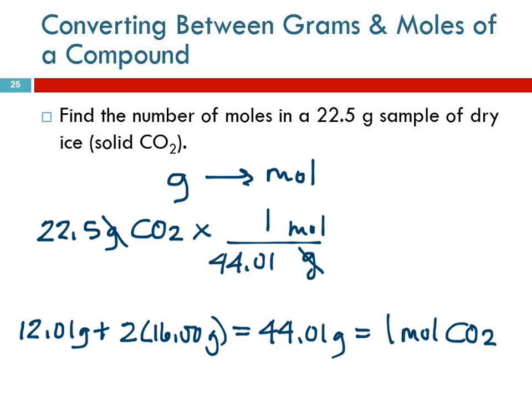So one mole weighs 44.02 grams. There's no remembering, should I multiply, should I divide? The units tell you what to do. 22.5 divided by 44.01, and we come up with, this one should have three significant figures. 0.511, and the unit is moles of CO2. Can you have less than one mole of substance? Sure you can. You can have less than a dozen donuts. You can have half a dozen or a third of a dozen. You can have less than a mole.